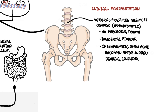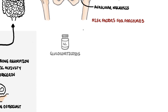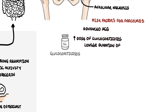Fractures due to glucocorticoid use occur at higher bone mineral density values than those in postmenopausal osteoporosis. On a side note, glucocorticoids can cause avascular necrosis. Risk factors for fractures associated with glucocorticoids include advanced age, larger steroid doses, longer duration of glucocorticoid therapy, and an increased risk of fracture has been reported with doses as low as 2.5 to 7.5 milligrams daily.